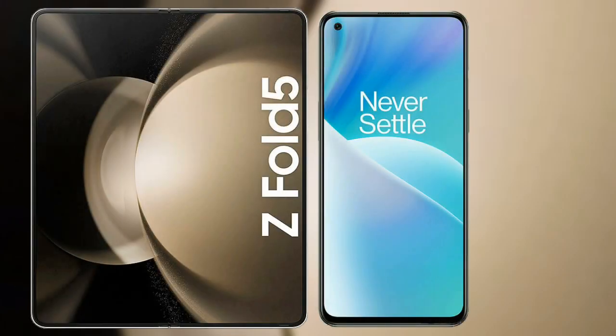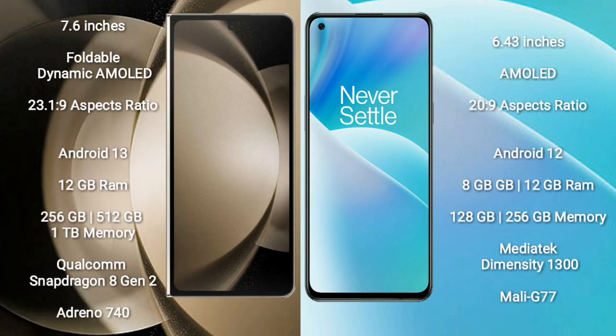I will compare the new Samsung Galaxy Z Fold 5 with OnePlus Nord 2T. The Samsung Galaxy Z Fold 5 comes with a 7.6-inch foldable dynamic AMOLED display. The OnePlus Nord 2T comes with a 6.43-inch AMOLED display.